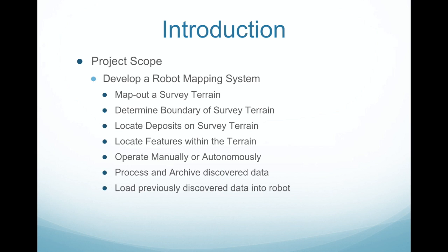Here is a brief introduction to the MESA Map robot system. The aim of the system is to develop a robot mapping system that is able to map and survey terrains, determine survey boundaries, locate deposits and features of the terrain, operate manually and autonomously, handle and store new information, as well as to load previous existing data into the robots.